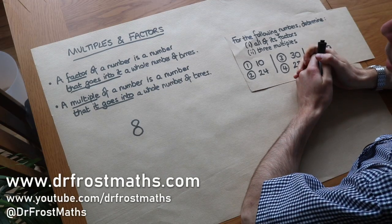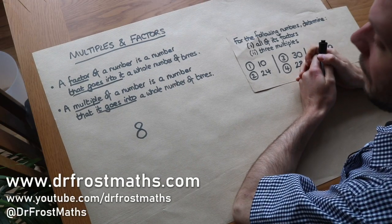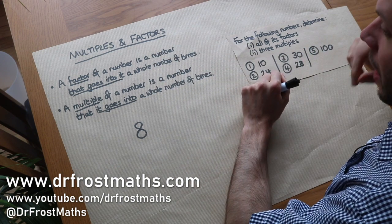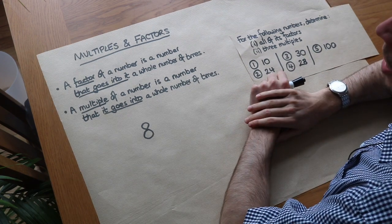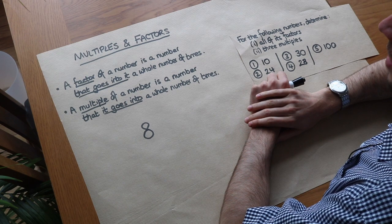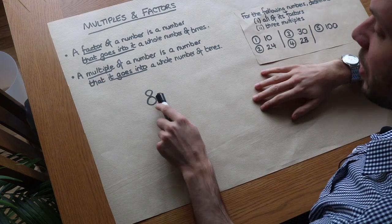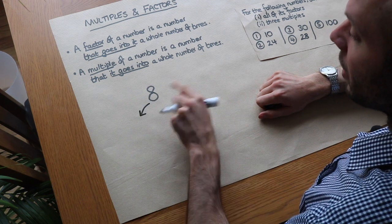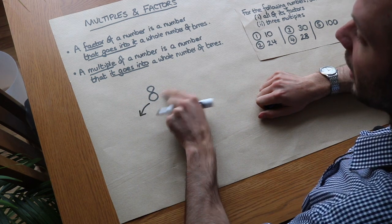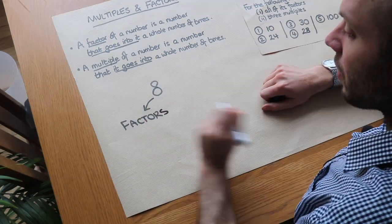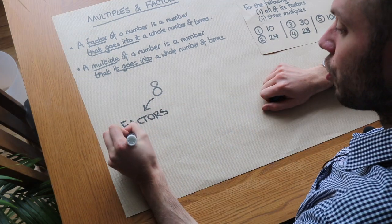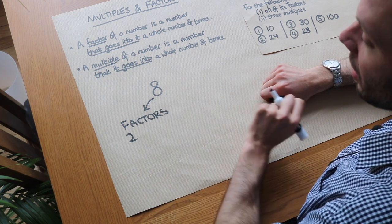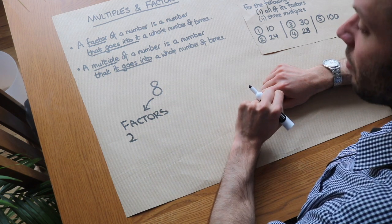Hello and welcome to this video on multiples and factors of a number. A factor of a number is a number that goes into it a whole number of times. So if we took 8, for example, we need numbers that go into it — numbers that we can divide 8 by and get a whole number. So 2 is a factor of 8 because 2 goes into 8 a whole number of times without any remainder.